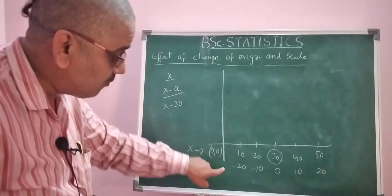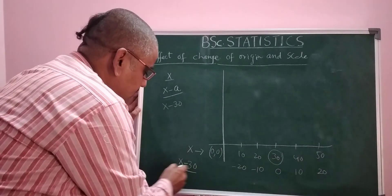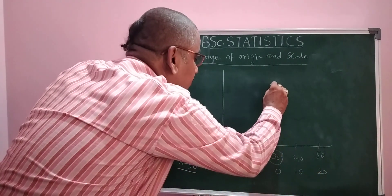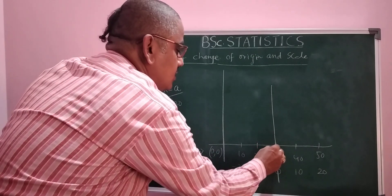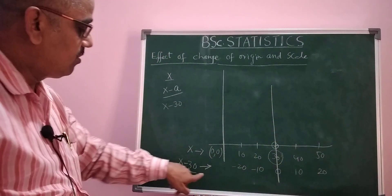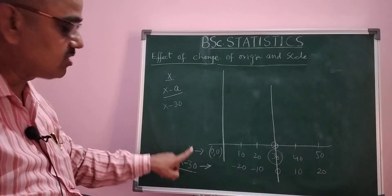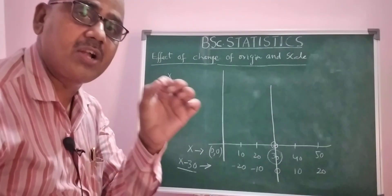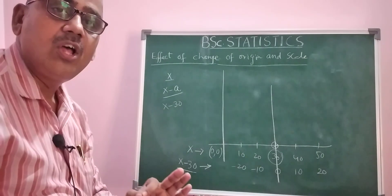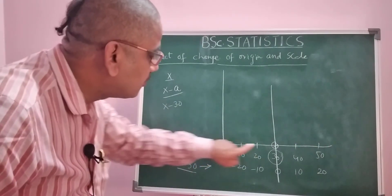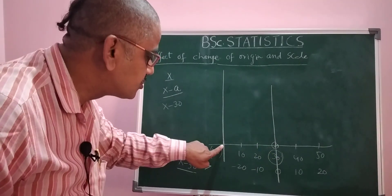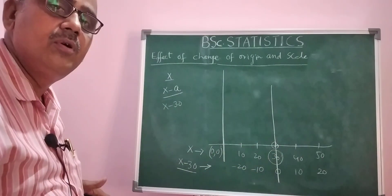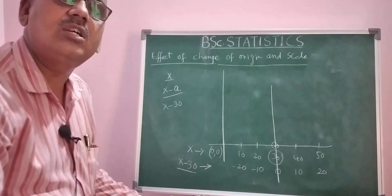For the values x minus 30 — that is minus 20, minus 10, 0, 10, 20 — the origin is shifted from here to here. For the original values of x, the origin is at 0, but after subtracting 30, the origin is shifted to the value 30. This is what shifting the origin means.